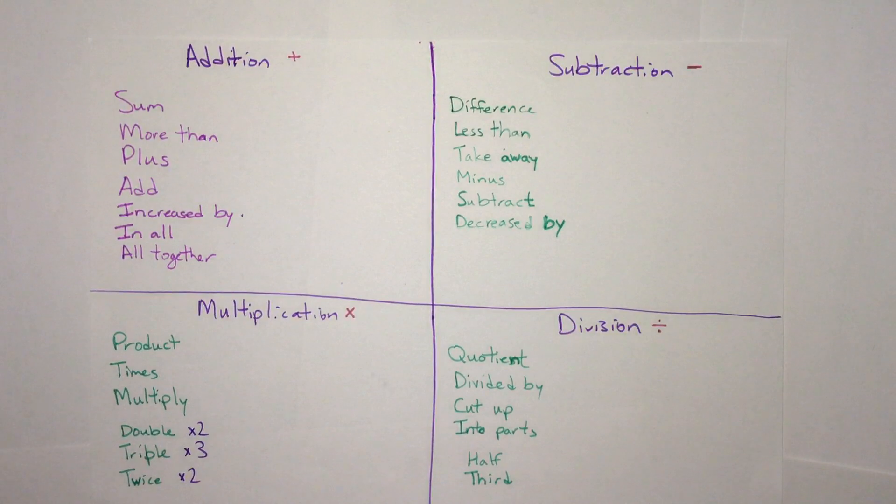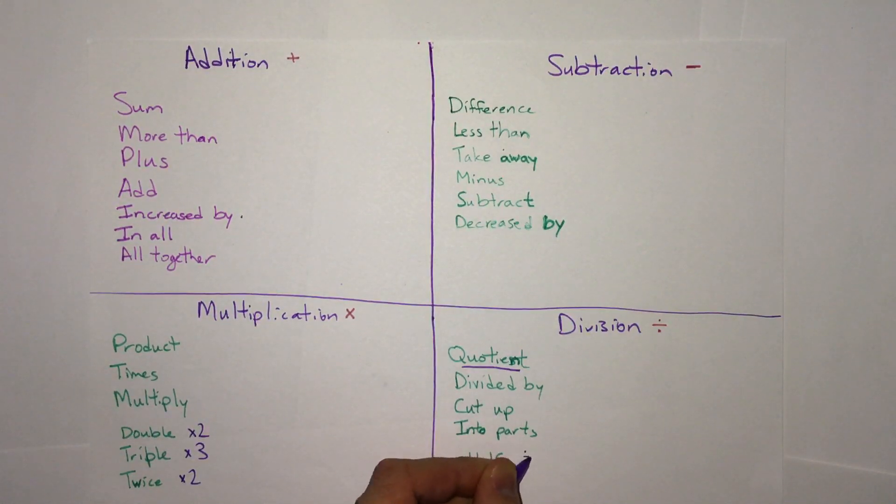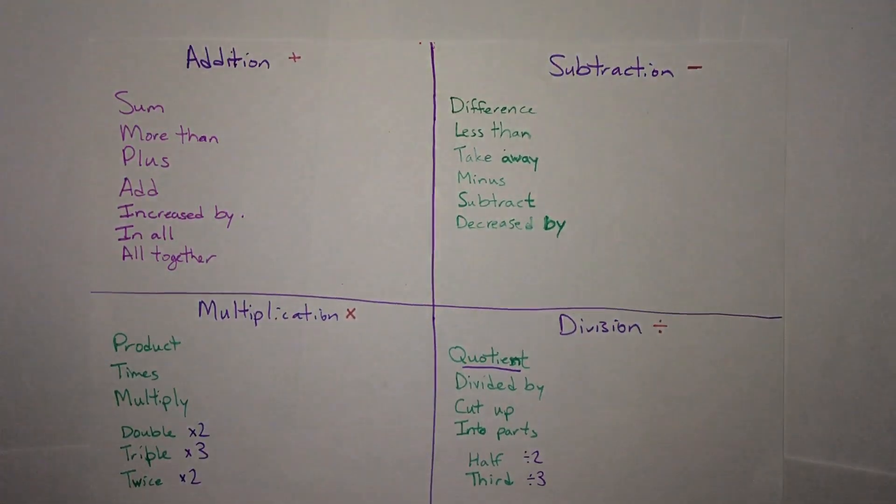And then division. Our main word is quotient, but we also may see divided by, cut up, into parts, half, so divided by two, or even thirds, divided by three, some specific words.